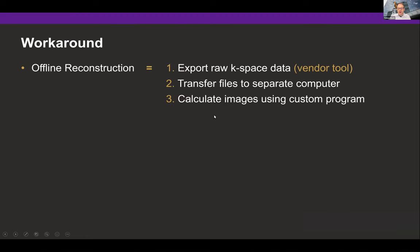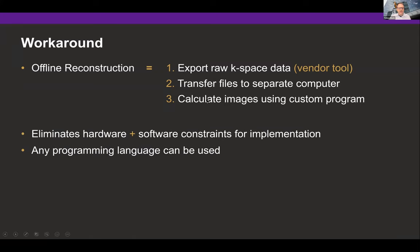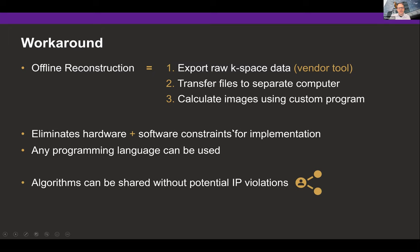These are some of the reasons why clinical translation of new reconstruction algorithms always takes quite a long time. The alternative is to implement your reconstruction as an offline reconstruction: you export the raw data using a vendor-provided tool, transfer the raw data file to a separate computer, and then calculate the images there using a custom developed program. This offline approach eliminates all hardware and software constraints — you can implement your reconstruction algorithm using any programming language, and it also makes it possible to openly share the source code without potential IP violations, which is quite interesting for reproducible research.